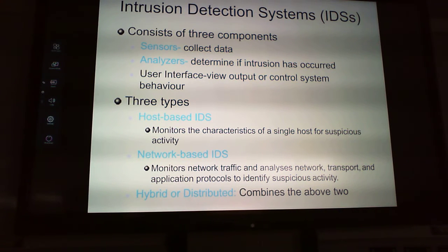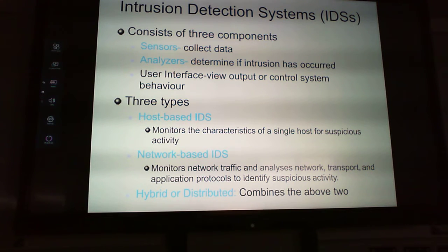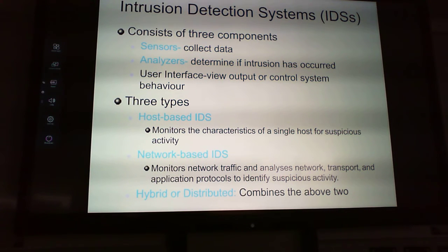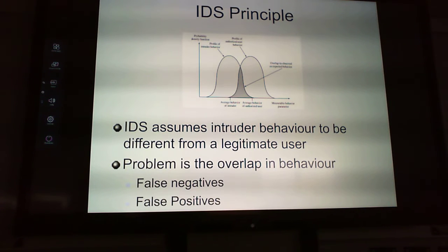An IDS consists of three types of components: sensors, analyzers, and a user interface. There are three types of IDS: host-based IDS, which monitors the characteristics of a single host; network-based IDS, which monitors network traffic; and hybrid or distributed, which is a combination of both. The hybrid one is probably most effective because a single host-based IDS is a single point of failure.